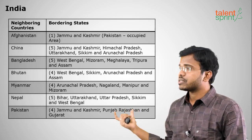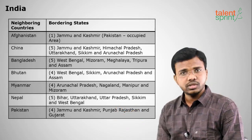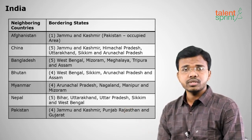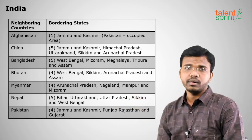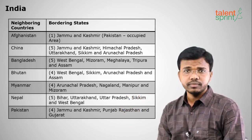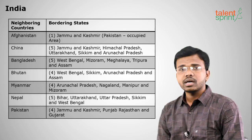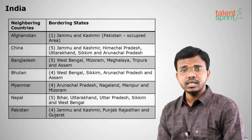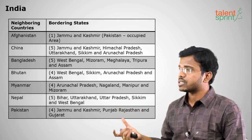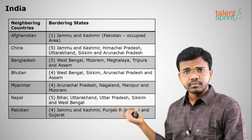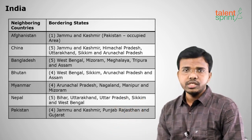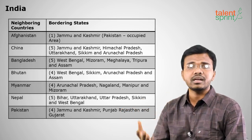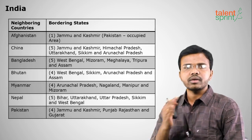Bhutan shares boundary with four states: West Bengal, Sikkim, Assam, and Arunachal Pradesh. Myanmar shares boundary with four states: Arunachal Pradesh, Nagaland, Manipur, and Mizoram. Nepal shares boundary with five states: Uttarakhand, Uttar Pradesh, Bihar, West Bengal, and Sikkim. Pakistan shares boundary with four states: Jammu & Kashmir, Rajasthan, Gujarat, and Punjab.